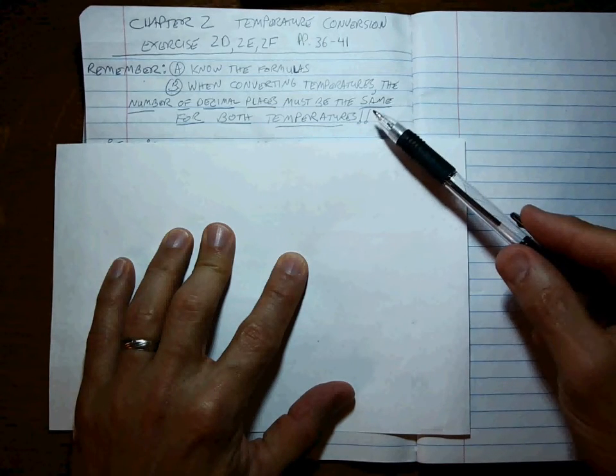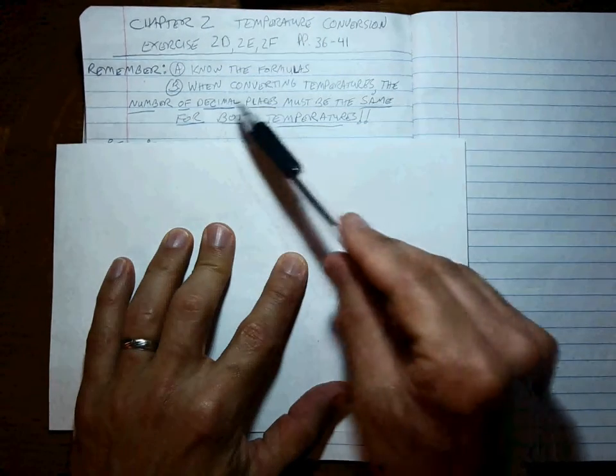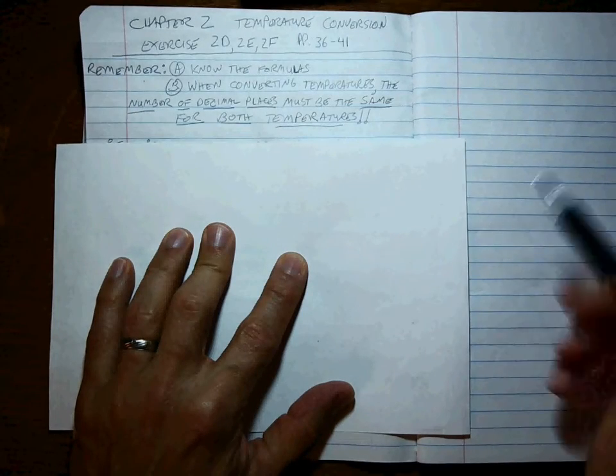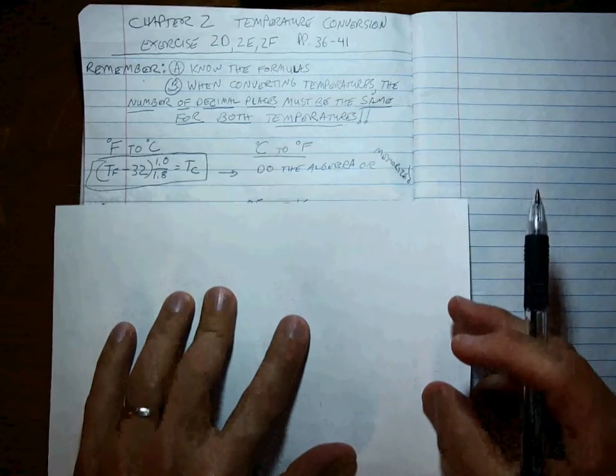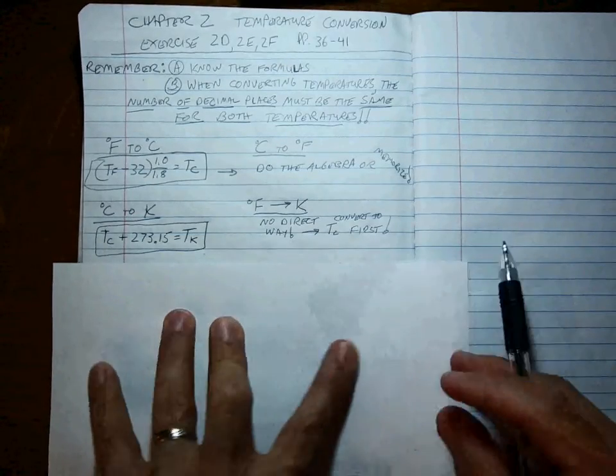It's not about the number of sig figs, it's about the number of decimal places. Okay, so let's do a couple of problems to point out what needs to be done. But first, let's talk about the formulas.